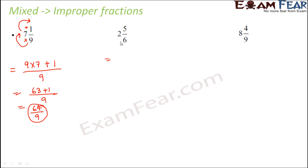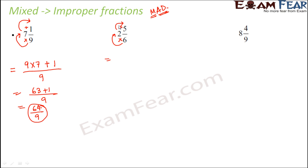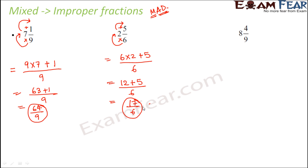In a similar way, multiply these two and then add this. You can remember it as MAD — first Multiply then Add. So for 2 and 5 by 6: 6 × 2 plus 5, divided by the denominator which is 6. So that's 12 plus 5 divided by 6, which equals 17 by 6. So 17 by 6 is an improper fraction.